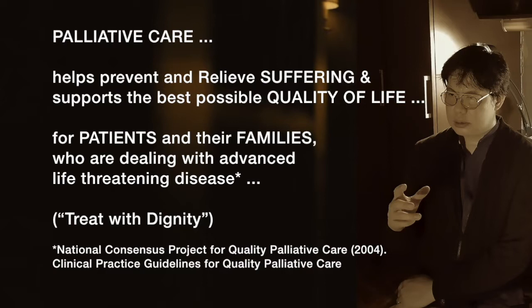If a patient is going to die — say, in one to two months — with advanced cancer, and the mom, dad, and siblings are around, you feel responsible to continue caring for the patient and the family. You cannot cure the patient, but maybe you can help the child enjoy those remaining one to two months with his family. So how do we do that? We try to improve or optimize his quality of life as much as we can.